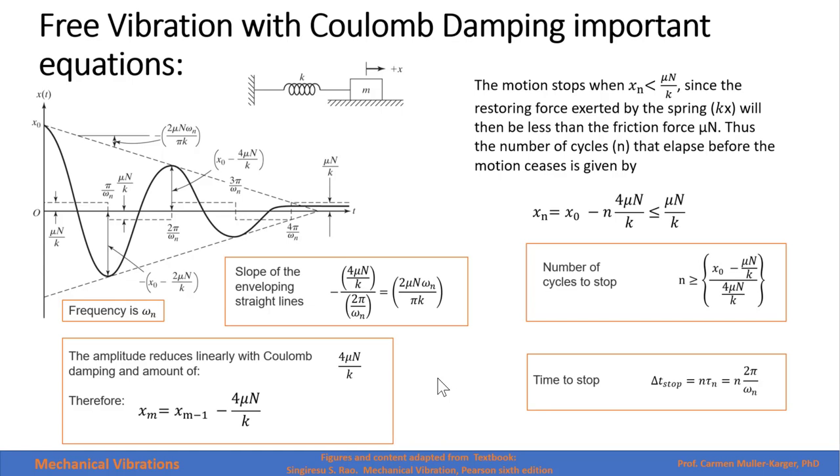The frequency of motion is the natural frequency instead of being the damped frequency. The motion is periodic with Coulomb damping. The system comes to a rest after some time with Coulomb damping.